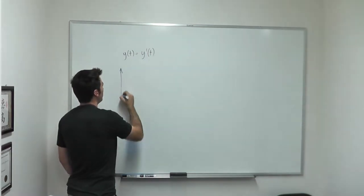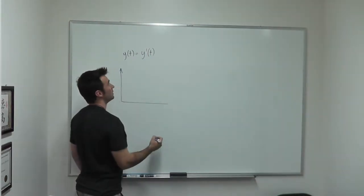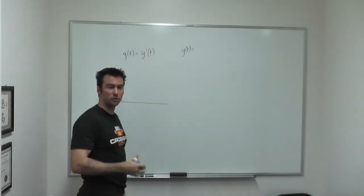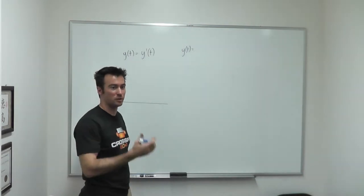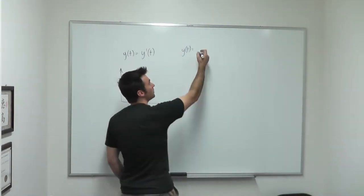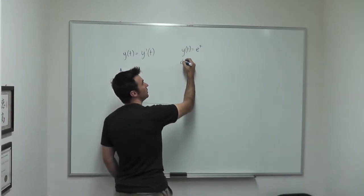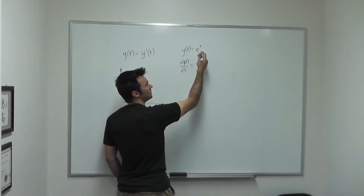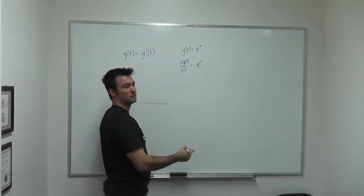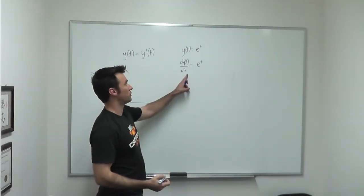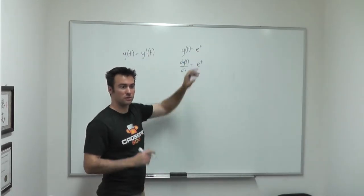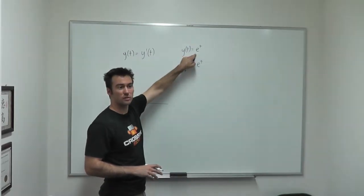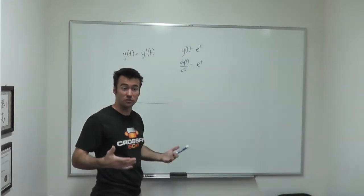This one is solved by y(t). I'm not going to write the general solution; I'm just going to write a particular solution — the family of solutions: some constant times e to the t. And how do we know that? Because dy(t)/dt is just e to the t. The derivative is equal to the original function. So we can guess and check, or we can solve these numerically.